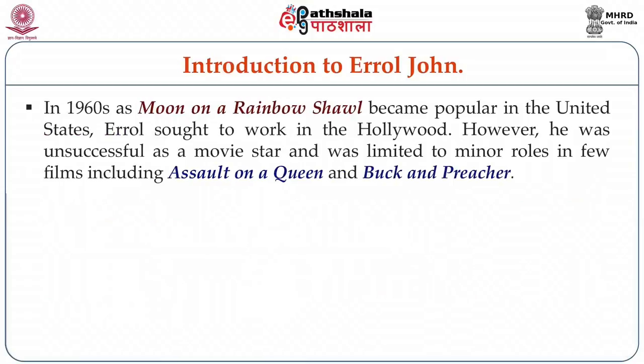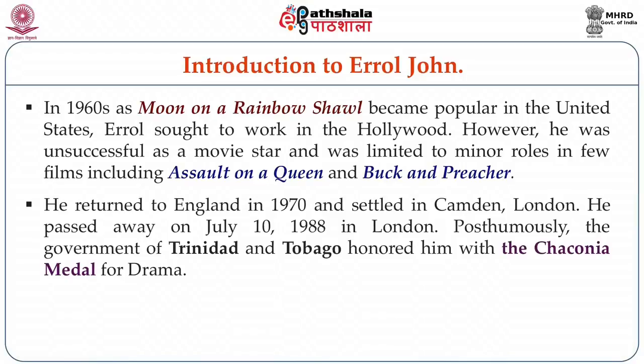In 1960, as Moon on a Rainbow Shawl became popular in the United States, Errol sought to work in Hollywood. However, he was unsuccessful as a movie star and was limited to a few minor roles in films including Assault on a Queen and Buck and Preacher. He returned to England in 1970 and settled in Camden, London. He passed away on July 10, 1988 in London. Posthumously, the Government of Trinidad and Tobago honoured him with the Chaconia Medal for Drama.